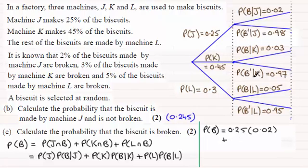And it's going to be 0.45 times 0.03, so 0.45 times 0.03. And finally L and broken, so it's 0.3 times 0.05, 0.3 times 0.05.